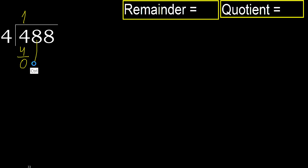Subtract. Next — eliminate 0 here. 8. Four multiply by 2 is 8.